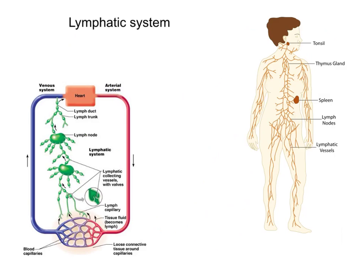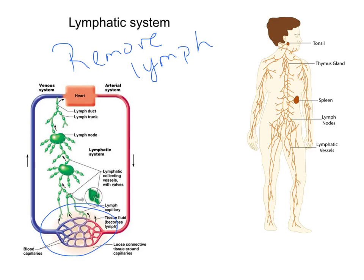The lymphatic system's main job is to remove fluid — called lymph — from around the cells. Lymph is a derivative of blood. The lymphatic system removes lymph from around the cells and filters it. The fluid surrounding capillaries enters lymph capillaries, passes through lymph nodes where it gets filtered, and is then returned back to the heart and into the circulatory system.